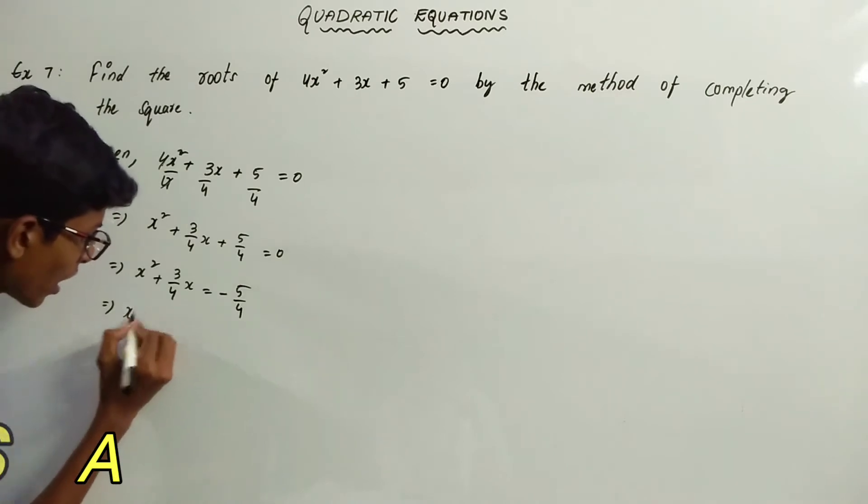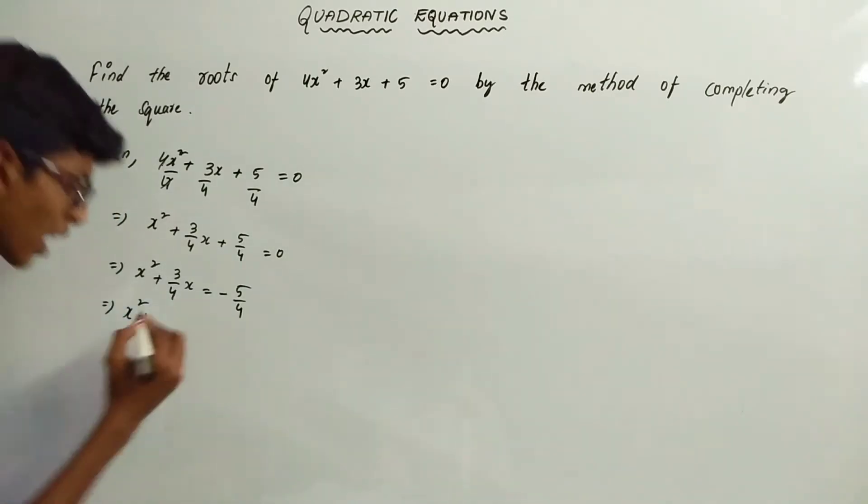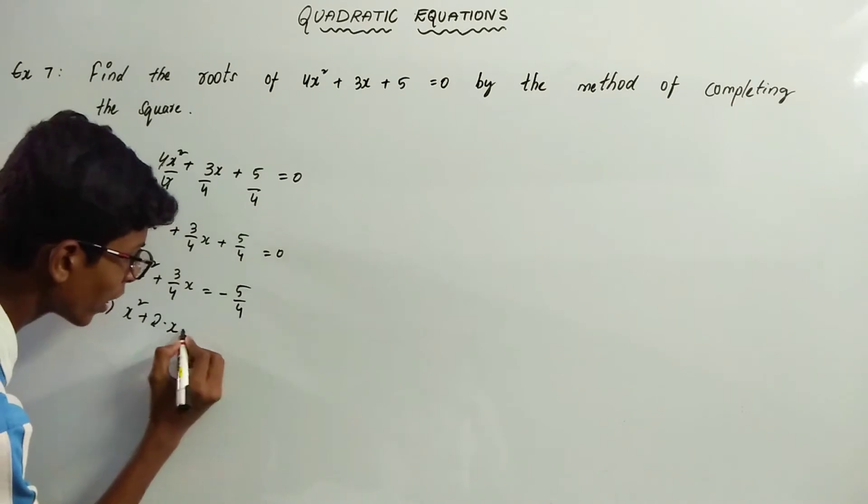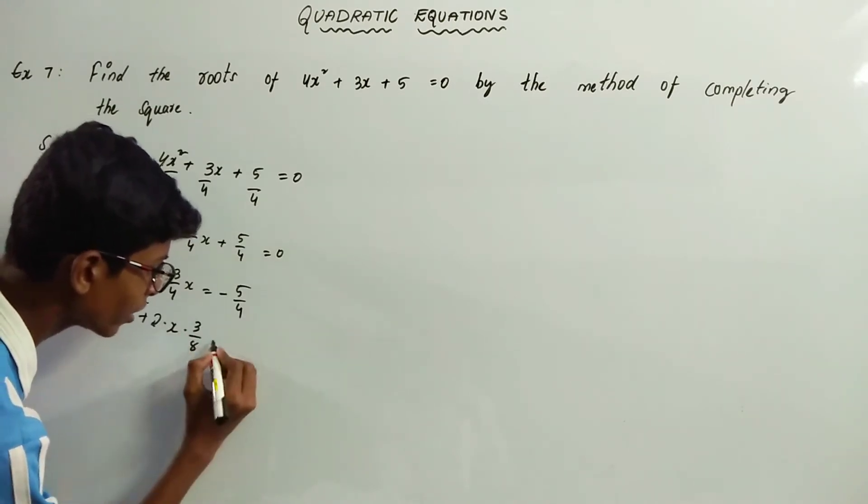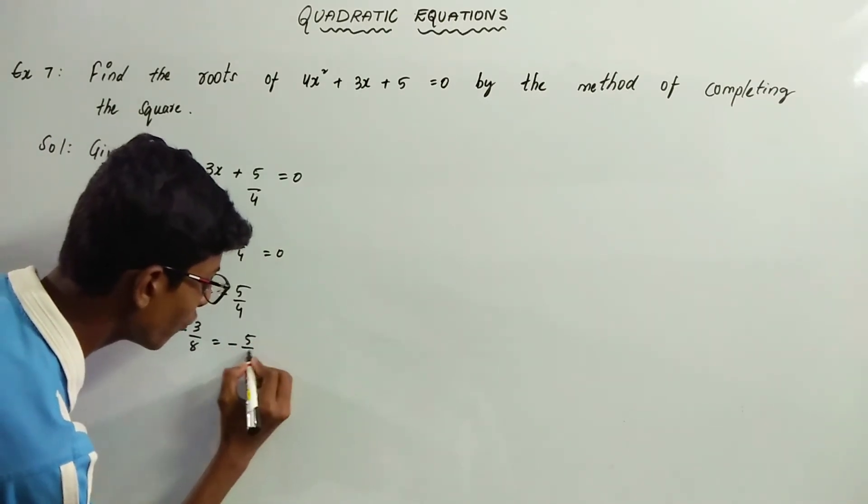So that is x², we can write (3/4)x as 2 · x · (3/8) = -5/4.